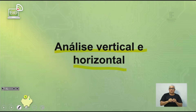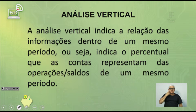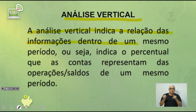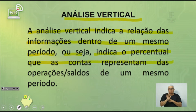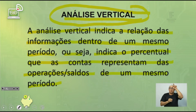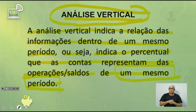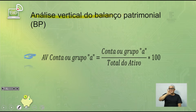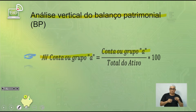Vamos falar sobre análise vertical e horizontal. A análise vertical, dentro do próprio ano, indica a relação das informações dentro de um mesmo período — o percentual que as contas representam das operações em um mesmo período. Como se calcula? A análise vertical de uma conta do balanço patrimonial é: conta A dividido pelo total do ativo, vezes 100. Exemplo: análise vertical do ativo circulante = ativo circulante (29.000) dividido pelo total do ativo (86.700), vezes 100 = 33,45%.